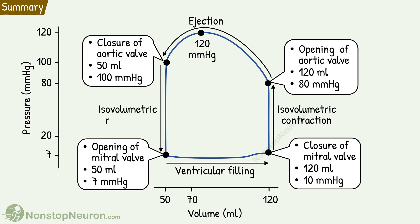This is followed by isovolumetric relaxation. During this, there is no change in volume, but pressure falls to about 7 mmHg. Thus, the entire cycle is completed. The area covered by this loop represents the net external work output of the ventricle.